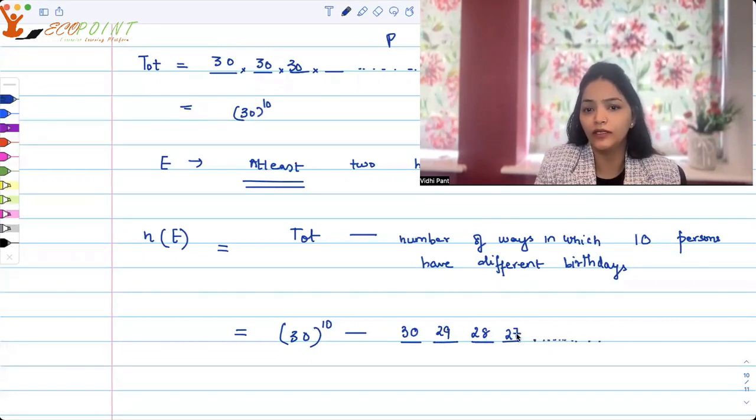So 30, 29, 28, 27, 26 options for the next one, 25 options for the next one, 24 options for the next one, 23, 22, 21 options, and that makes 10 people.